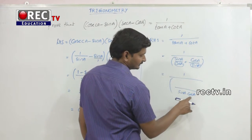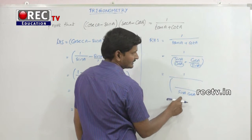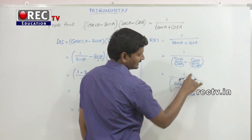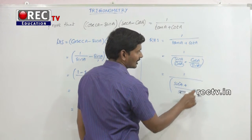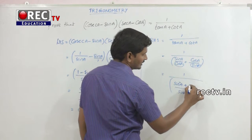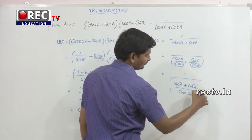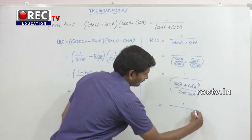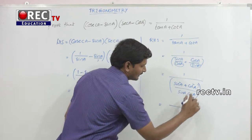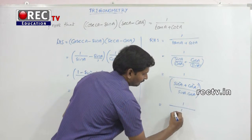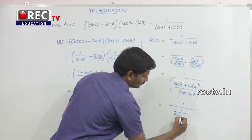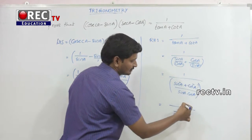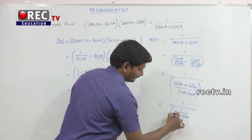After taking the LCM, for the tan(a) term, the remaining value is sin(a), giving sin(a) into sin(a) which is sin²(a). For the cot(a) term, the remaining value is cos(a), giving cos(a) into cos(a) which is cos²(a). So the denominator becomes sin²(a) plus cos²(a) divided by sin(a) into cos(a). By the first trigonometric identity, sin²(a) plus cos²(a) is equal to 1.